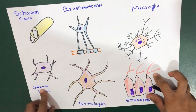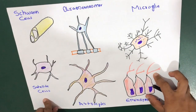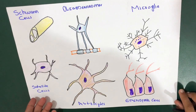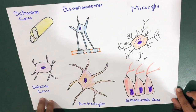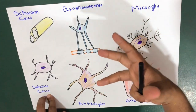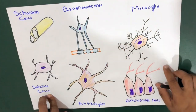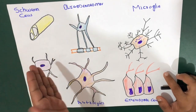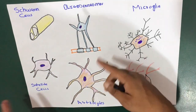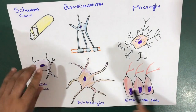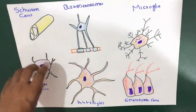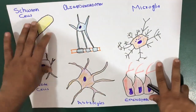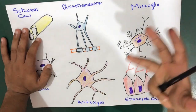Another type of cell in the peripheral nervous system is the satellite cell. Satellite cells regulate nutrition of the neuron and neurotransmitter levels around the neuron in ganglia. That is the function of satellite cells.